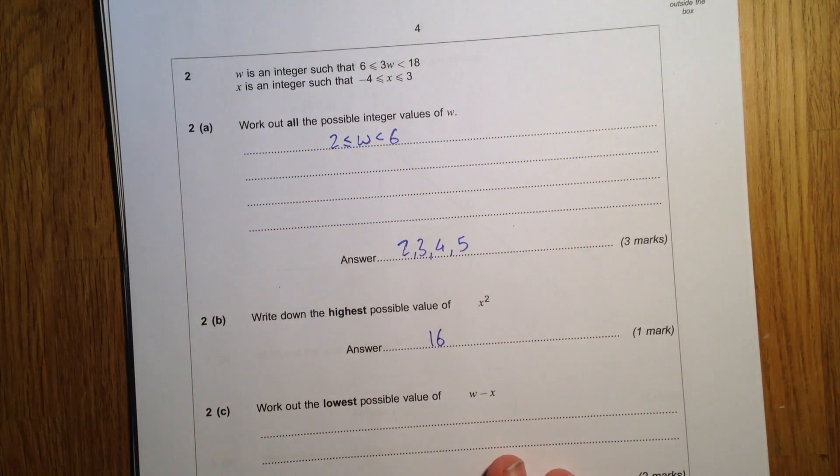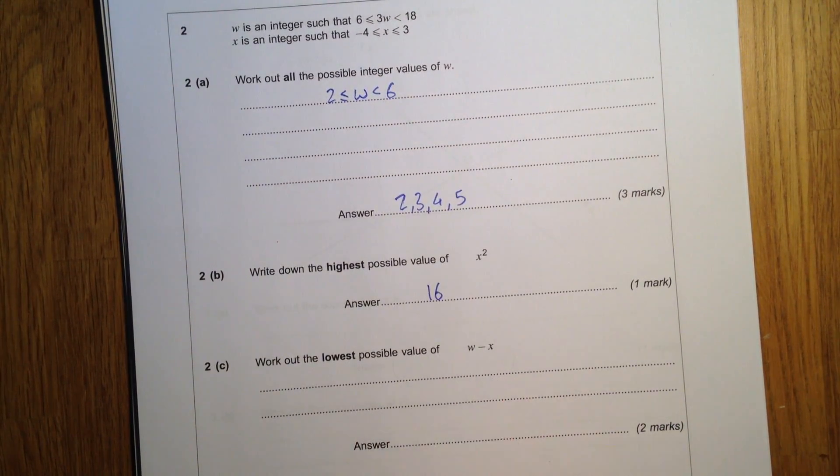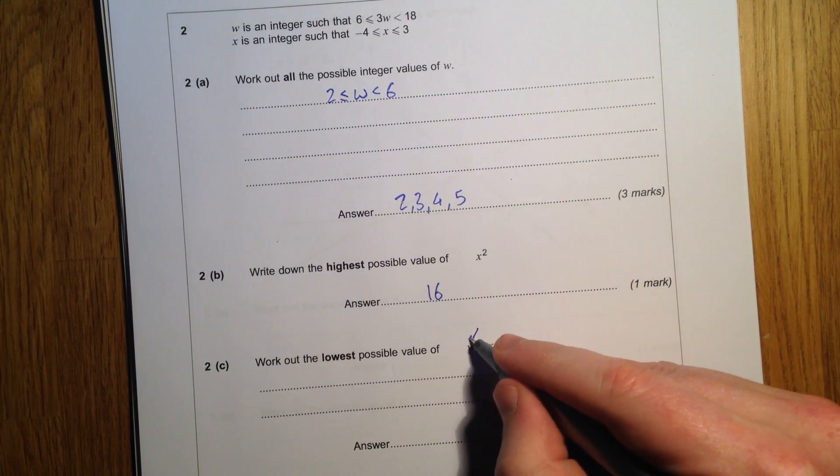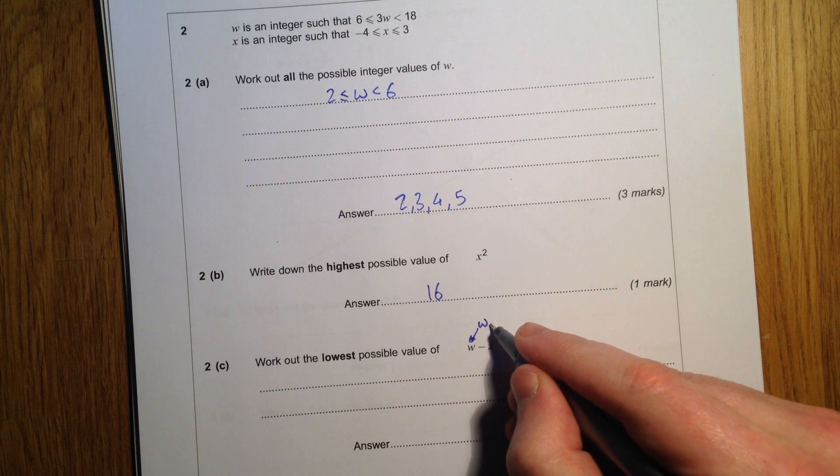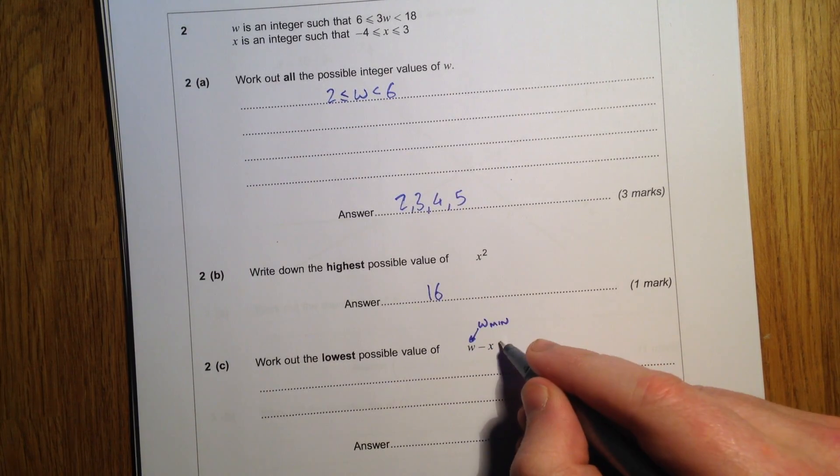And all the numbers in between are going to be less than that. We have the lowest possible value from w take away x. So I want the smallest value of this, the minimum w.